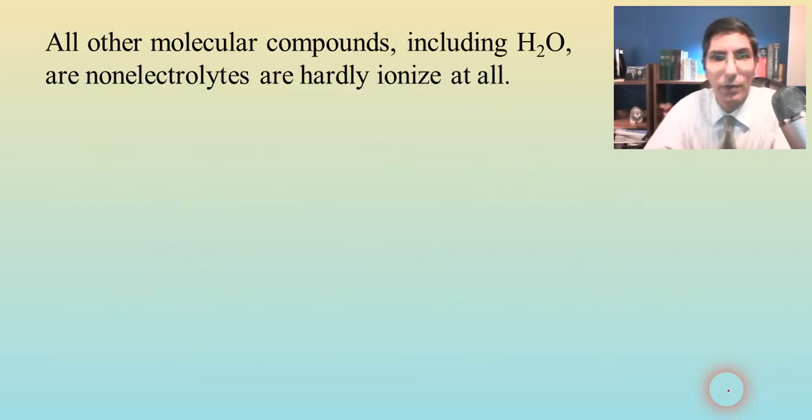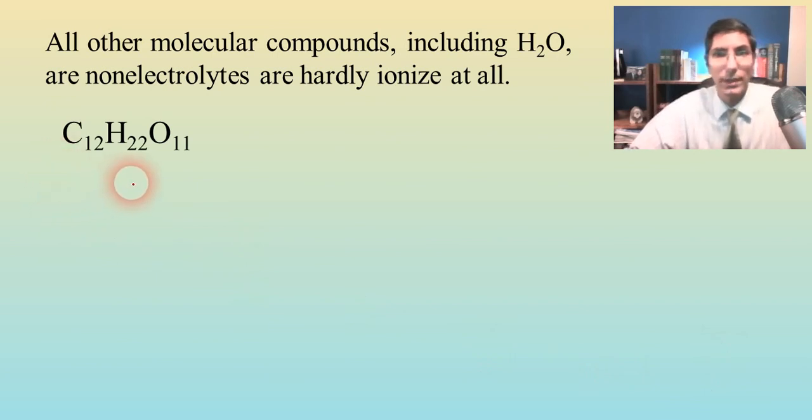Now, what is the summary of all this? If we take the strong electrolytes, those soluble ionic compounds and the strong acids and the strong bases, those are your strong electrolytes. And then we have the weak electrolytes that really don't ionize much. Those are your weak acids and weak bases. Well, everything else is going to be a non-electrolyte. All other molecular compounds, that includes water. Those are non-electrolytes and they really don't ionize. For example, sucrose or table sugar, C12H22O11, it does dissolve in water, but it doesn't produce any ions to speak of whenever it dissolves in water.